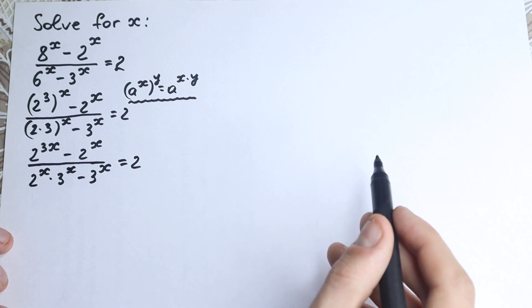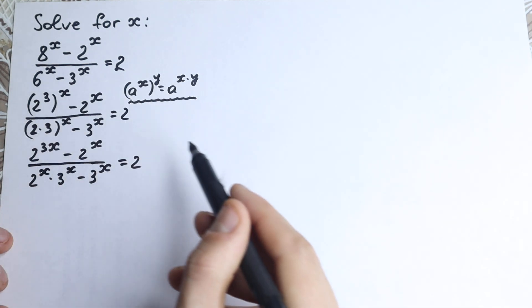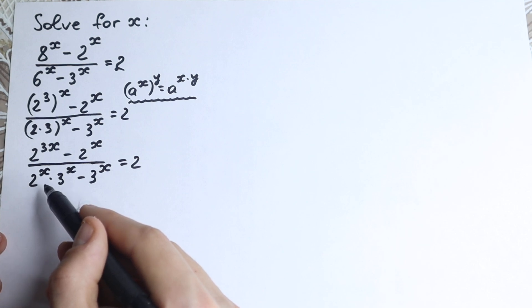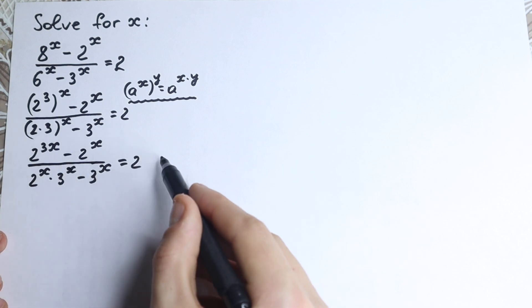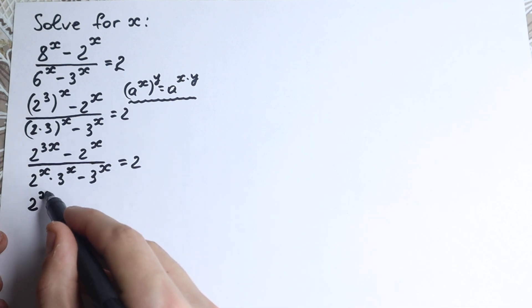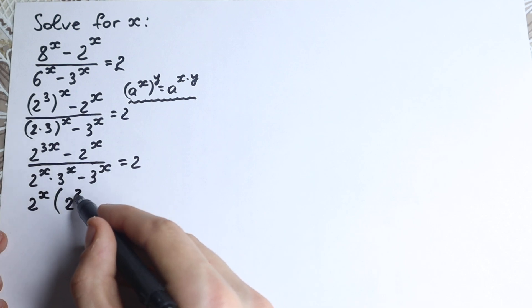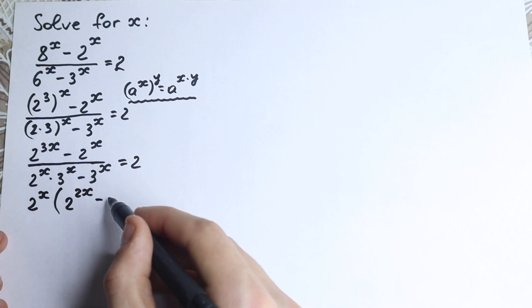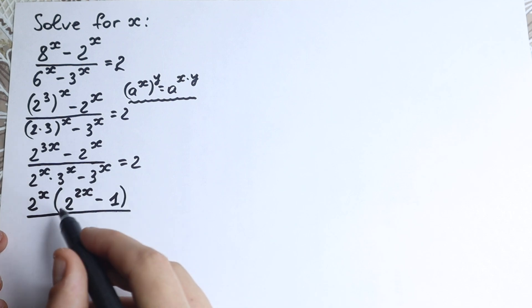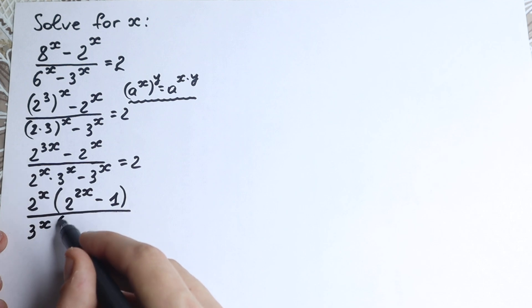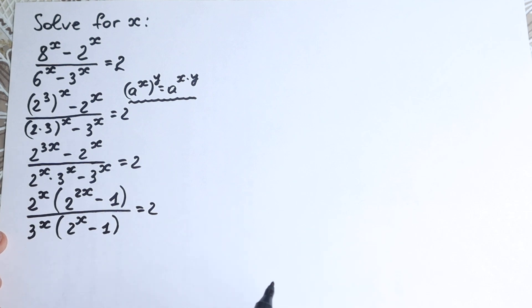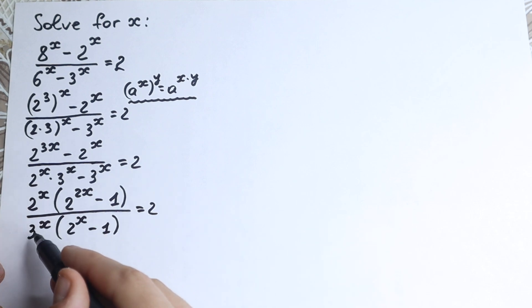Now, 2 to the power 3x means 2 to the x multiplied three times, so we can factor 2 to the x from the numerator. In parentheses we get 2 to the power 2x minus 1. In the denominator, we factor out 3 to the x, giving us 3 to the x times the quantity 2 to the x minus 1, equal to 2.